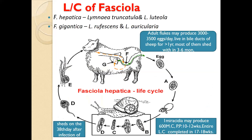In the life cycle of Fasciola, metacercaria directly enters the definitive host through grazing. After entry inside the intestines, young flukes exist and then penetrate the intestinal wall, entering the peritoneal cavity, from where they migrate to the liver and become adults. After fertilization, these adult flukes deposit eggs, which are liberated through the feces of the definitive host.